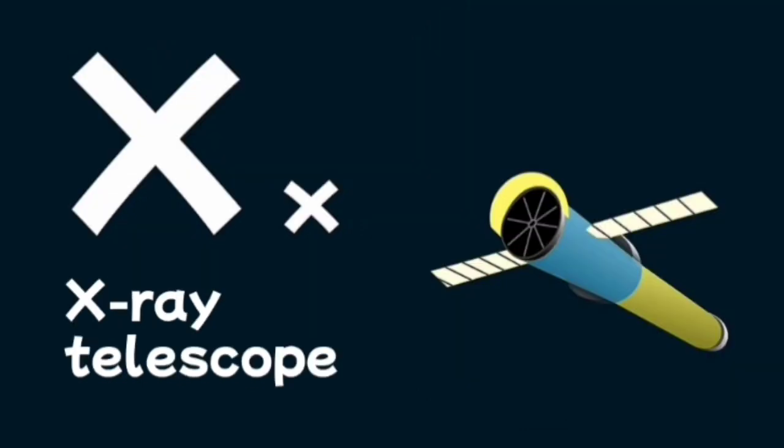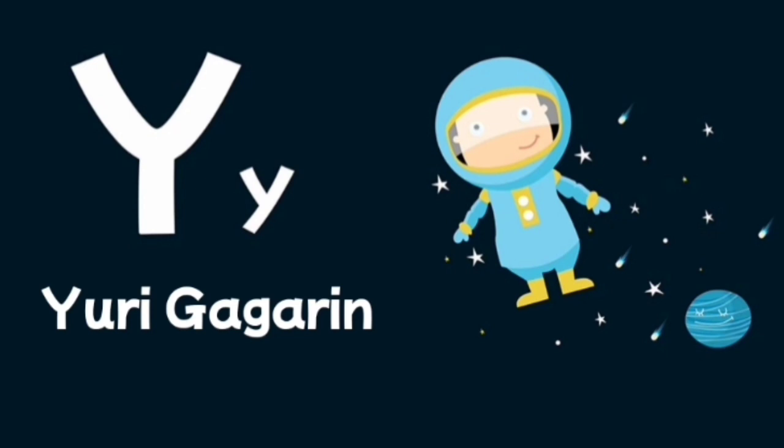X is for X-ray telescope, a type of telescope to look at space using X-rays. Y is for Yuri Gagarin, the first man to travel to space.